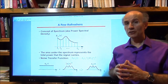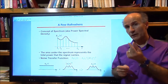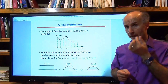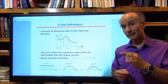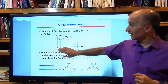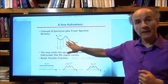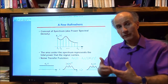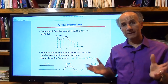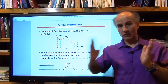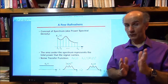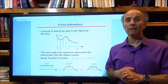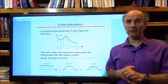In theory, it should not be a one-hertz bandwidth — it should be an infinitesimally small bandwidth. If that's the case, then you can see that the total area under the spectrum represents the total average power carried by the signal across all frequencies. So we integrate this function to find the total average power.